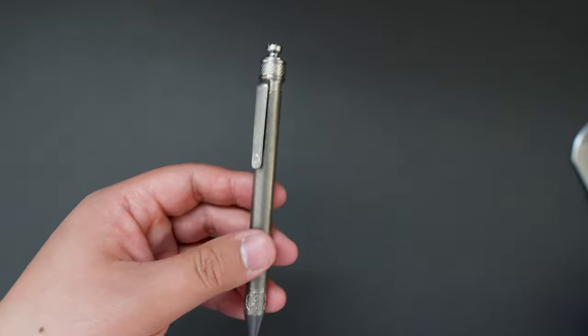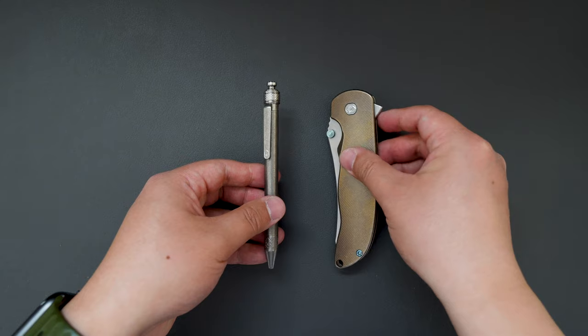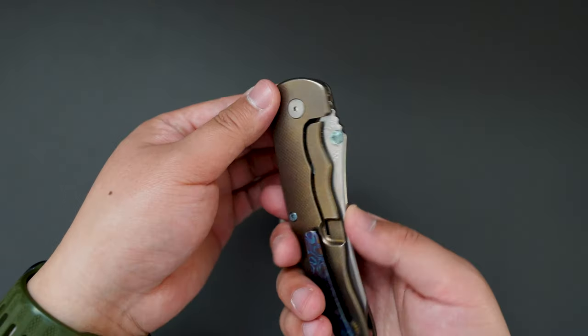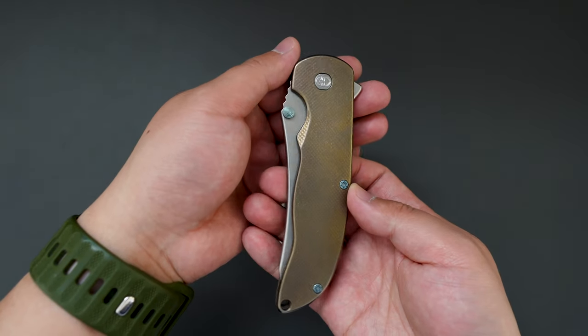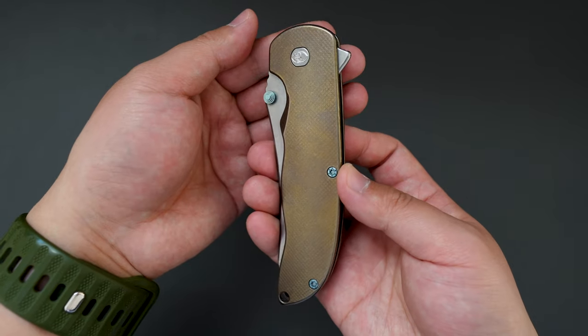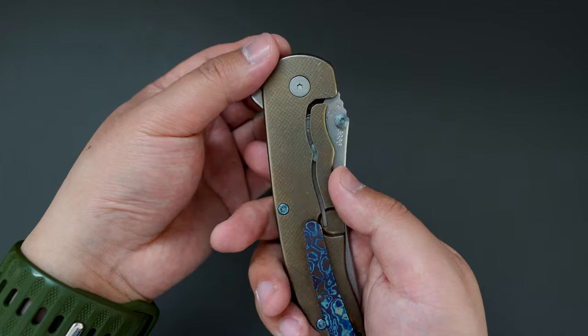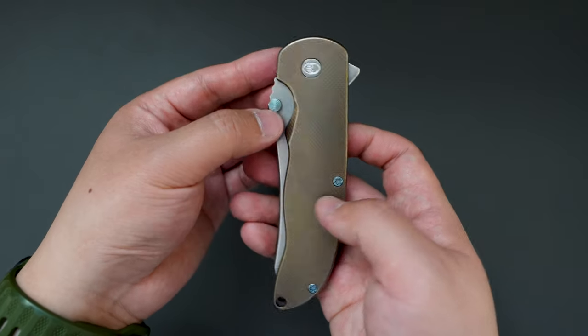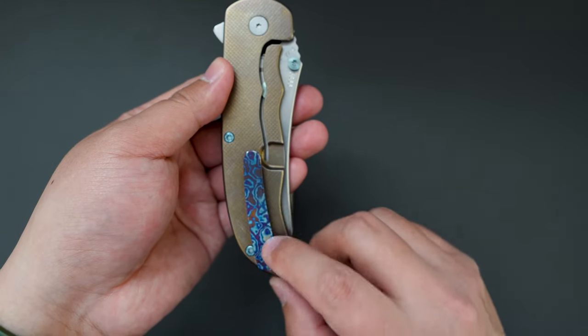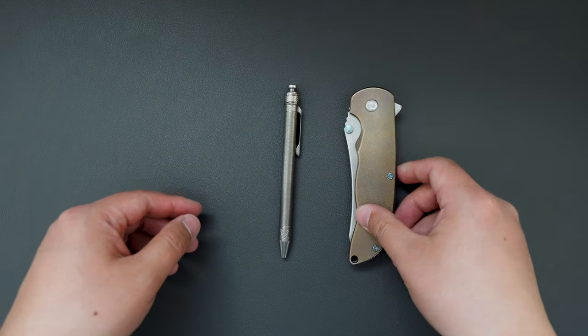So now let's bring the Grimsmo family together. I have my Grimsmo Norseman. This is their first knife. Also their iconic knife design. This one has bronze anodized titanium scales. And nice blue hardware. And aftermarket custom Damascus clip. Super good.